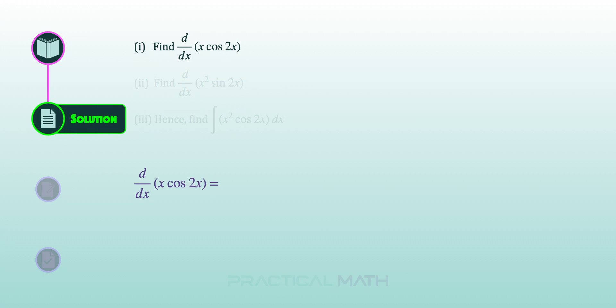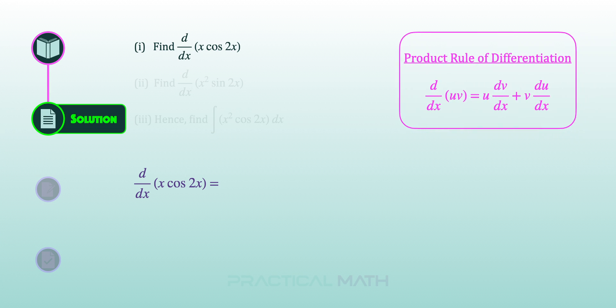In the first part of the question, to differentiate x cosine 2x, we will have to apply the product rule of differentiation where we differentiate uv with respect to x. We will begin by first copying u — in this case, copying x — followed by differentiating v, that is differentiating cosine 2x.